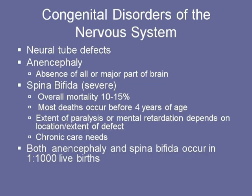Congenital disorders of the nervous system: the most concerning are neural tube defects. Anencephaly is the worst form — absence of all or a major part of the brain. Spina bifida in severe cases has an overall mortality of 10 to 15%, and most deaths occur before four years of age. The extent of paralysis or mental retardation depends on the location and extent of the defect. These children have chronic care needs — they are generally paraplegic or quadriplegic with neurogenic bladders and propensity to aspiration. Both anencephaly and spina bifida occur in about one in 1,000 live births.